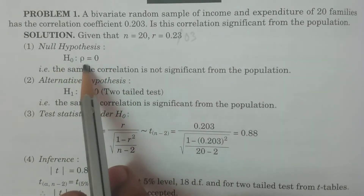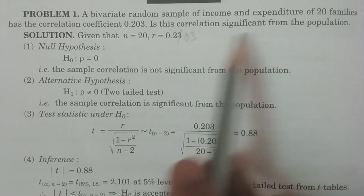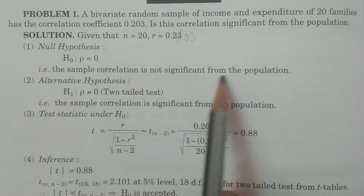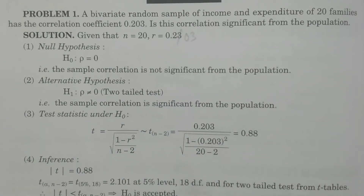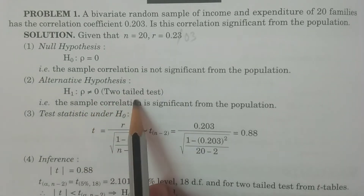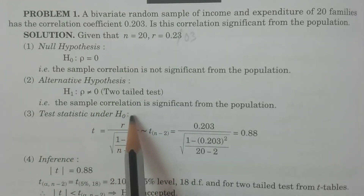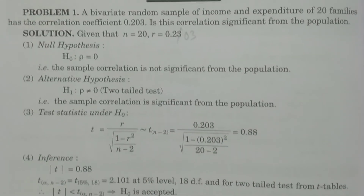The null hypothesis H0: rho is equal to 0, because the sample correlation is not significant from the population — there is no significance, it is not significant, drawn from the population. The alternative hypothesis H1: rho is not equal to 0, therefore it is a two-tailed test. The sample correlation is significant from the population — that is what we have to consider.